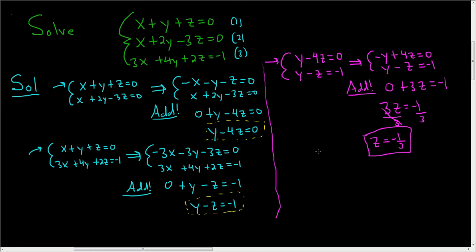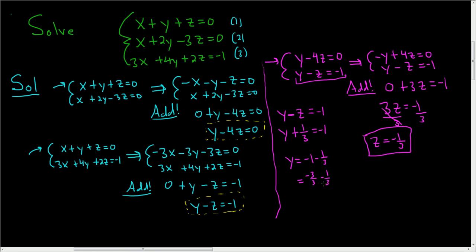Now that we have z, we use back substitution. Going back to the equation y minus z equals negative 1, we substitute z equals negative 1 third, giving y plus 1 third equals negative 1. Subtracting 1 third, we get y equals negative 1 minus 1 third. Since negative 1 is negative 3 thirds, y equals negative 4 thirds.